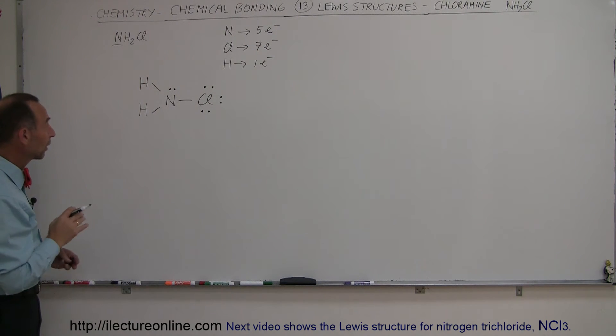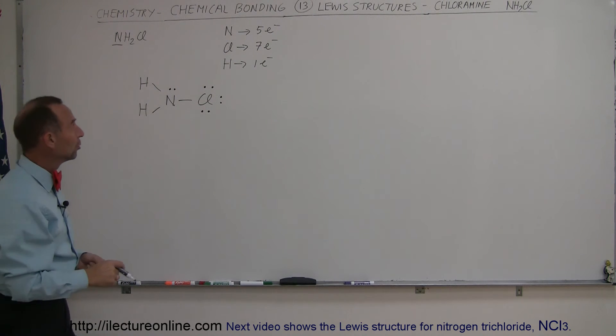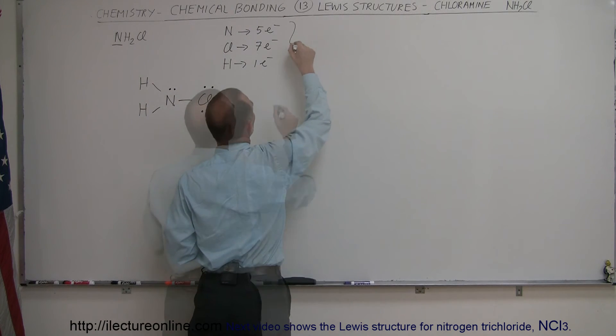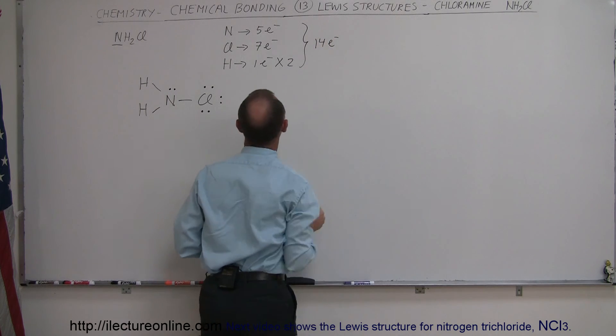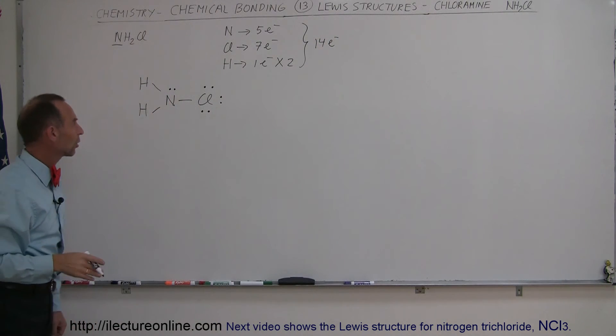Notice that the total number of valence electrons, so here times two, that would make it 14 valence electrons. Alright, so let's see if everything works out.